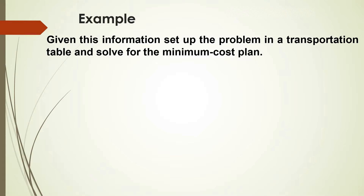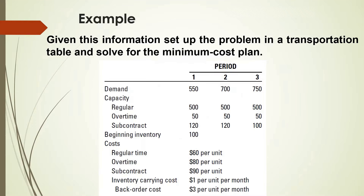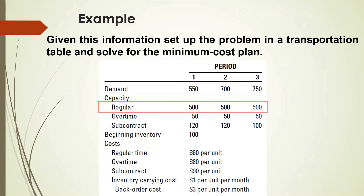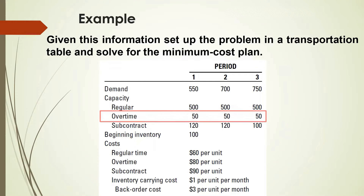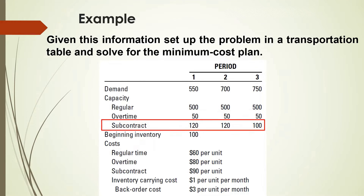Let us now practice the construction of aggregate planning using the transportation-type programming model by solving an example. Given this information, set up the problem in a transportation table and solve for the minimum cost plan. The information includes the demand for three periods. The capacity is 500 units during the regular time for each period, 50 units during overtime, and by the subcontractor: 120, 120, and 100 units for periods 1, 2, and 3 respectively.